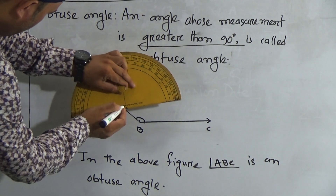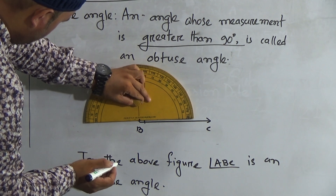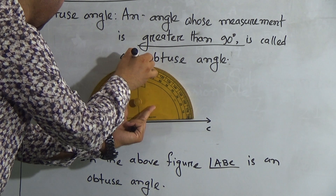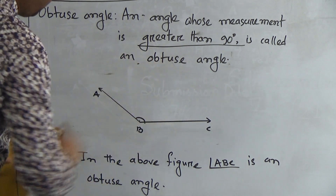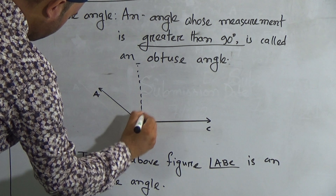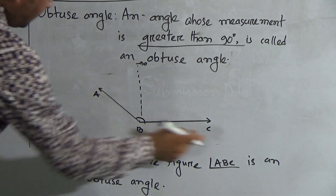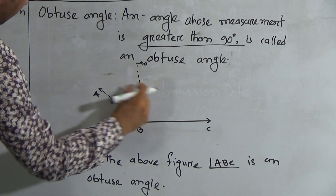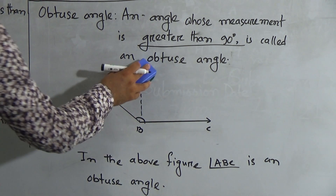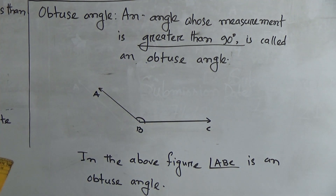Similarly, put this point on this point here. Then find out 90 degrees — here is the 90 degree mark. If you draw a line from here, you can see that angle ABC is greater than 90 degrees. So we can say angle ABC is an obtuse angle.